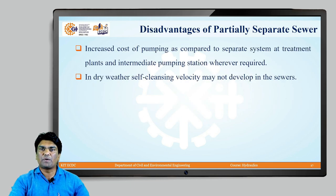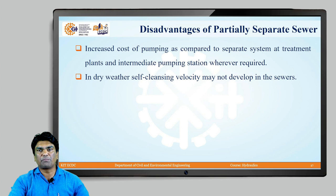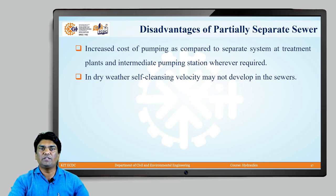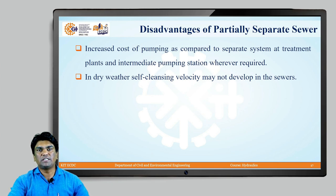Disadvantages of partially separate system: increased cost of pumping compared to separate system at treatment plants and intermediate pumping stations, because some storm water is combined with sewage, increasing the quantity to be pumped and treated. In dry weather conditions, self-cleansing velocity may not develop in the sewer, causing deposition or silting.